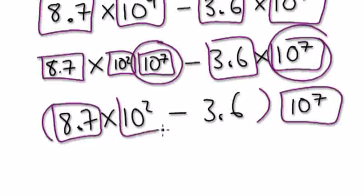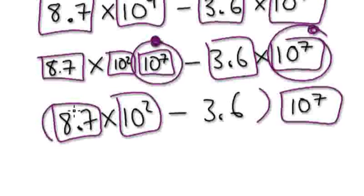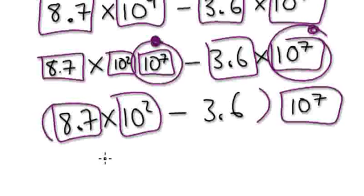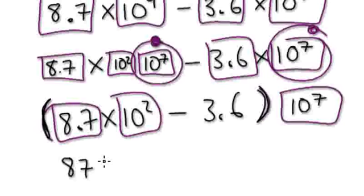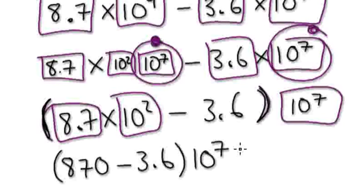So here, this is your block times this block here. Basically, you are just factorizing this, because this is common here, this is common, so you're just removing the common factor. So let's try and sort out what's inside the brackets here. So this would be 8.70 take away 3.6, times 10 to the power of 7.